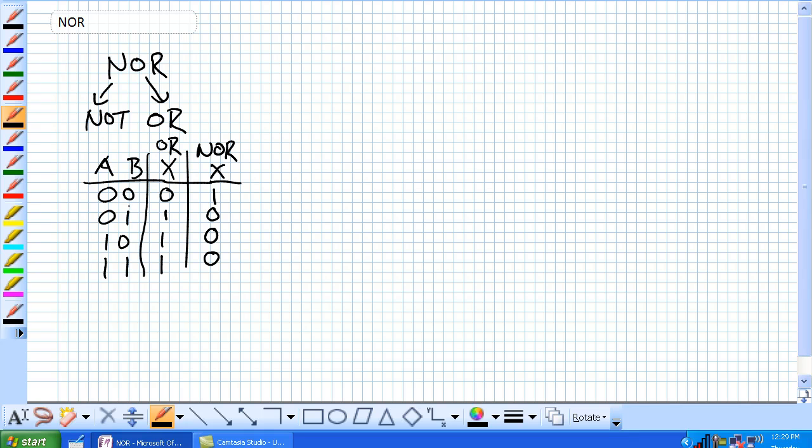Whereby anytime you basically get two zeros, you get a 1, anytime there's a 1, you get a 0. That is a NOR.